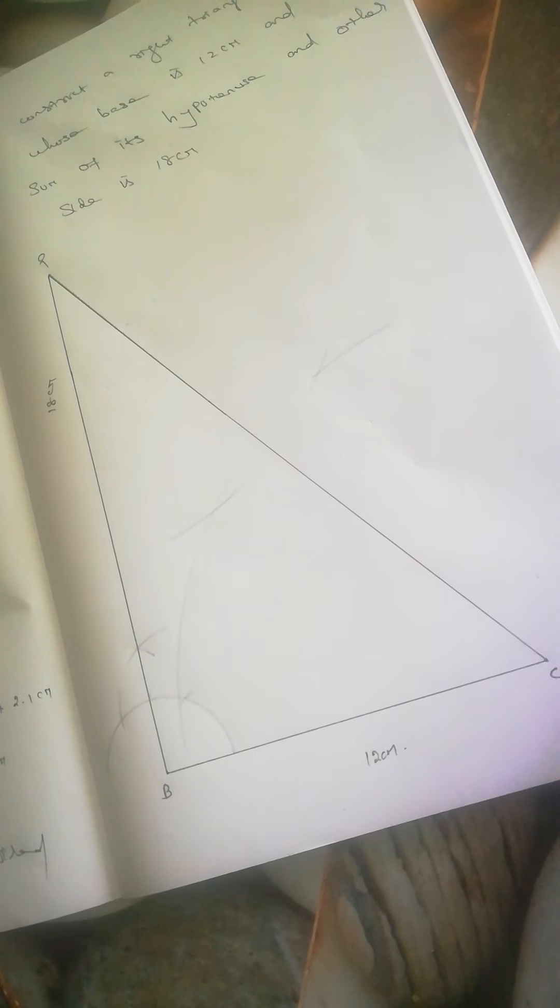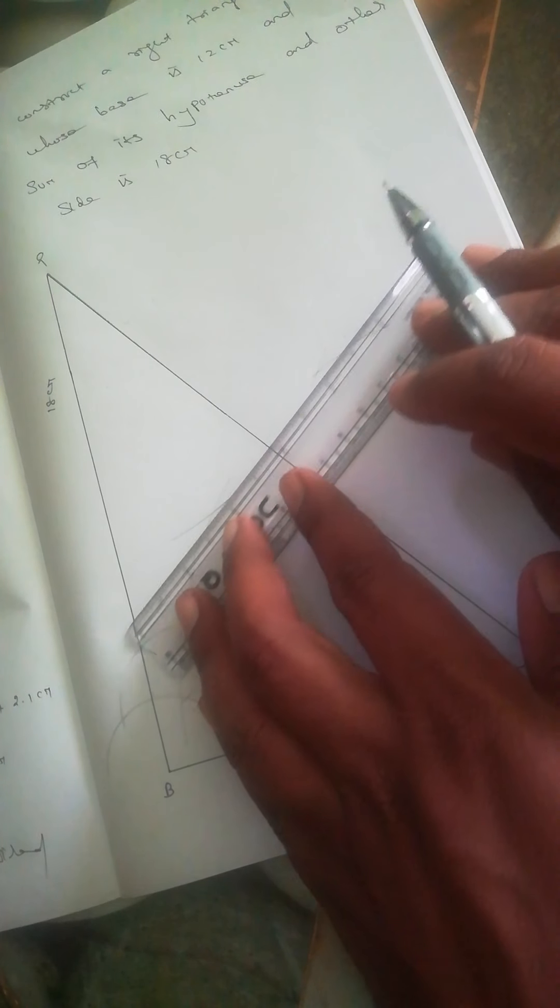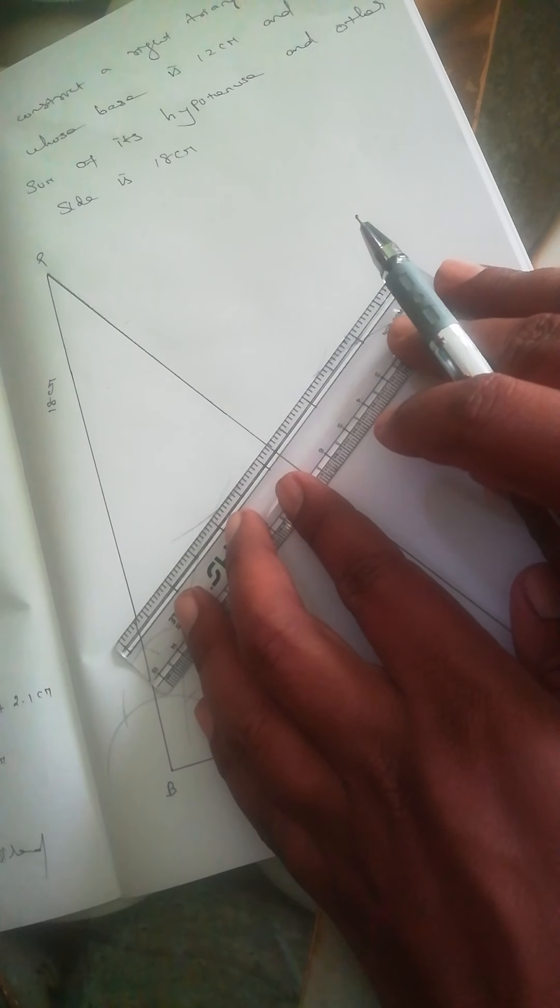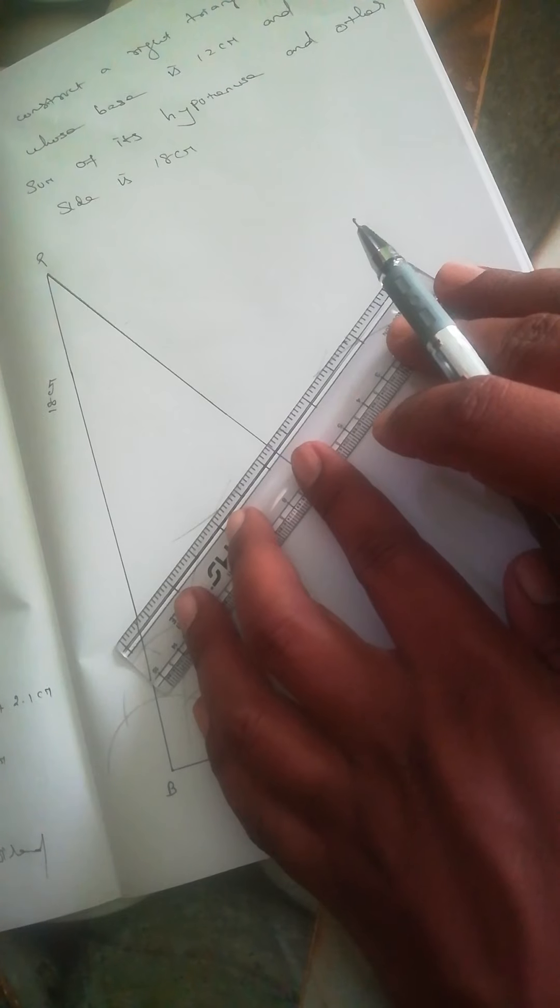Join the two intersection points with a straight line on both sides.